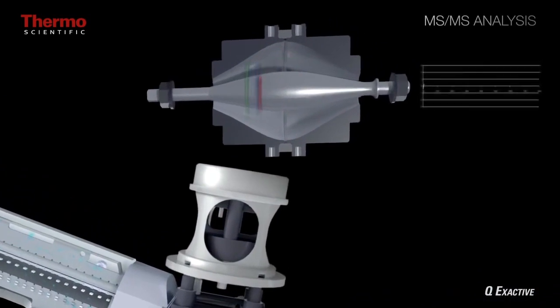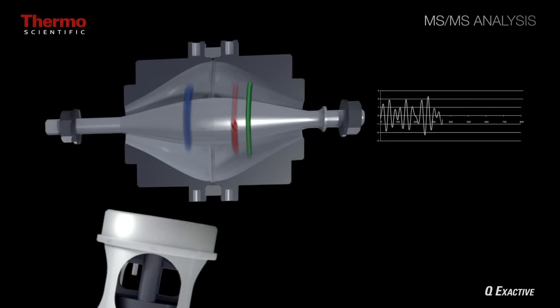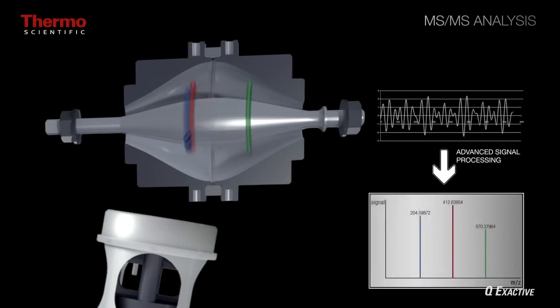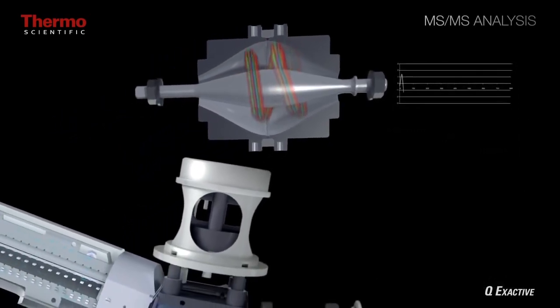In the orbitrap, once again, ions are trapped in an orbital motion where the frequency of rotation is related to the mass-to-charge ratio of the ion. Following Fourier transform, fragment ions with different mass-to-charge ratios will have different frequencies of oscillation.